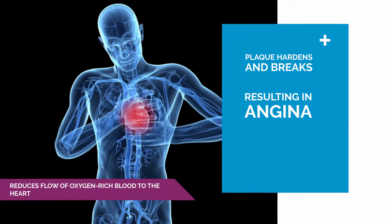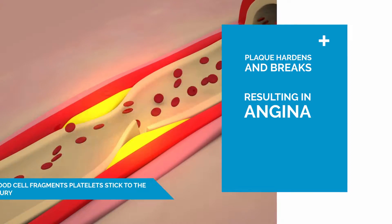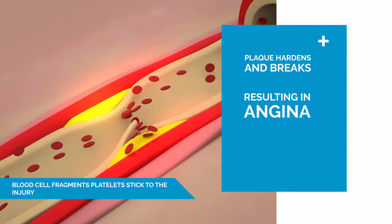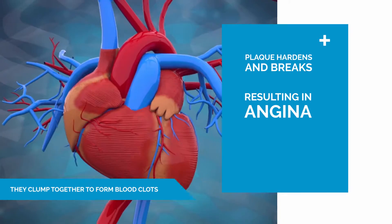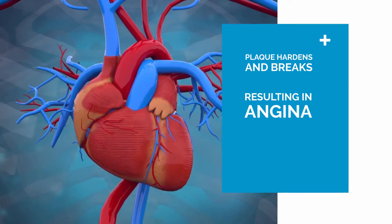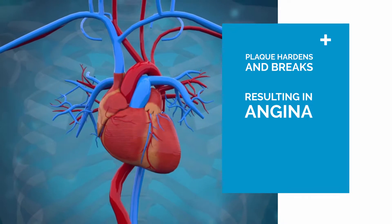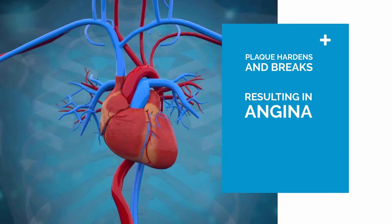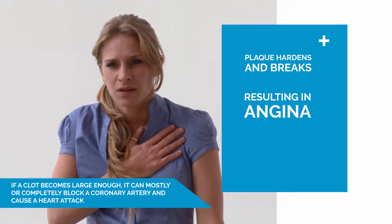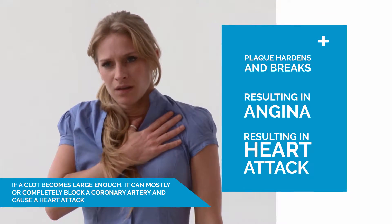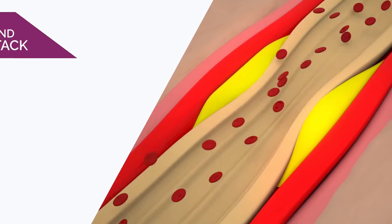This can cause chest pain or discomfort called angina. If the plaque ruptures, blood cell fragments called platelets stick to the site of the injury and may clump together to form blood clots. Blood clots can further narrow the coronary arteries and worsen angina. If a clot becomes large enough, it can mostly or completely block a coronary artery and cause a heart attack.